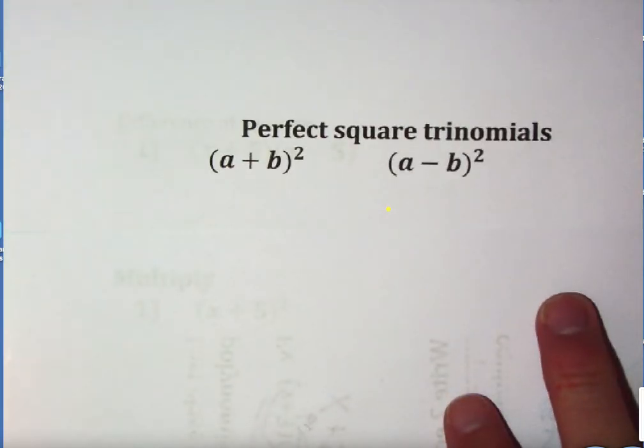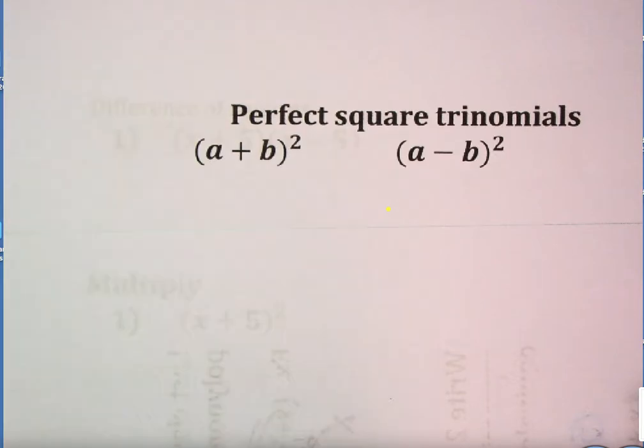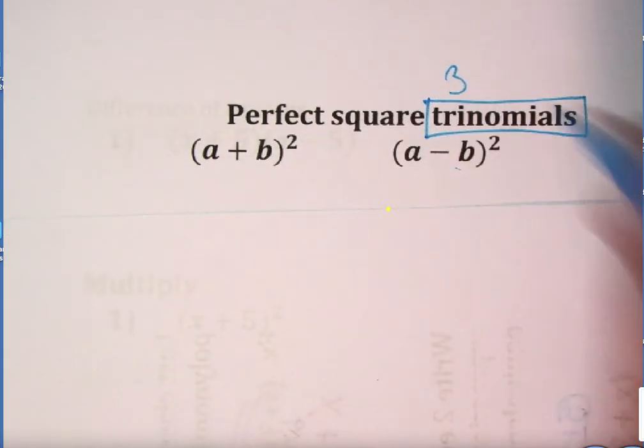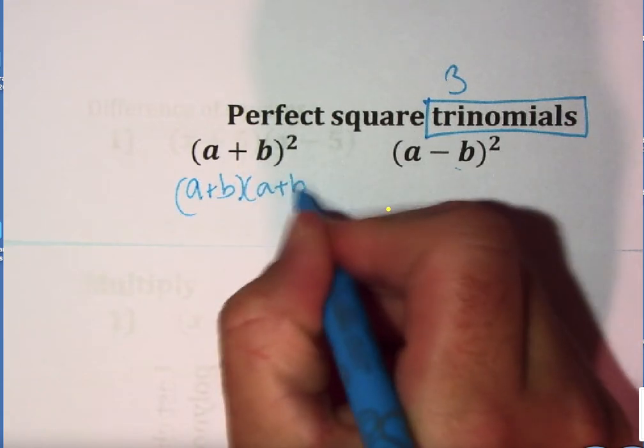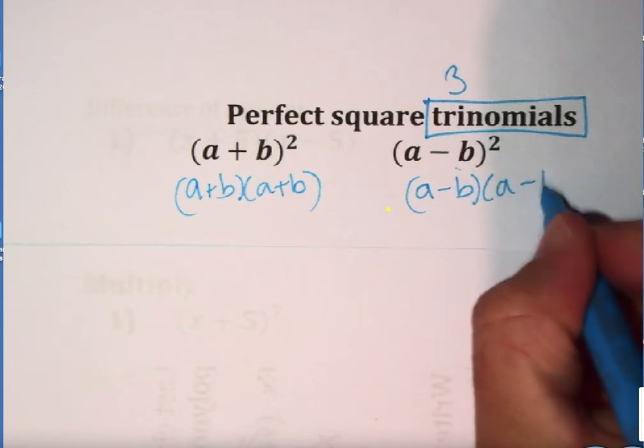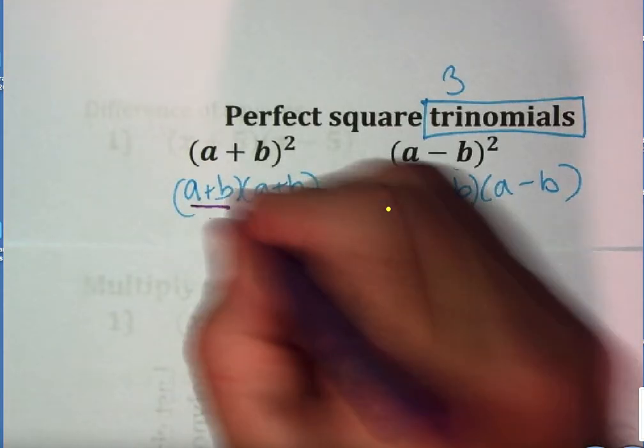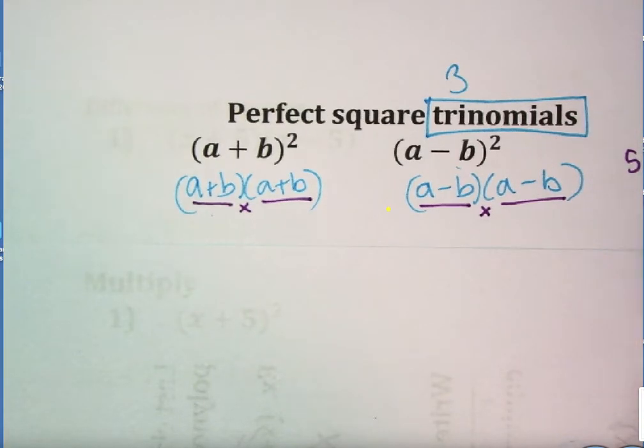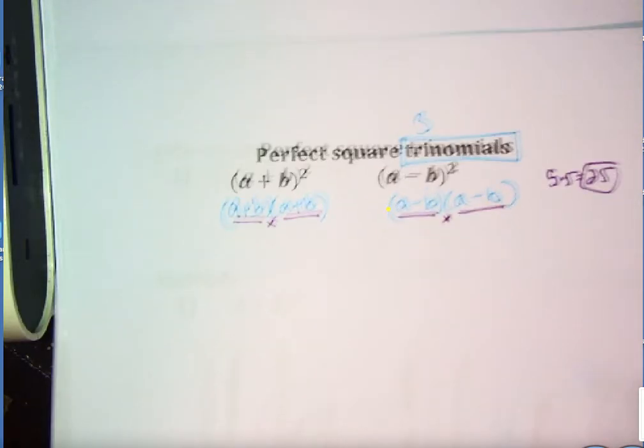This topic is basically called perfect square trinomials. Why do we call them trinomials? We'll talk about that. But these are considered perfect square trinomials. The biggest thing is why trinomials. a plus b squared we can write as a plus b times a plus b. And a minus b squared is a minus b times a minus b. The perfect square part comes from the same thing times itself, right? The same thing times itself. A perfect square is 5 times 5, 25. 25 is a perfect square. So a plus b squared, perfect square. a minus b squared is a perfect square. But what's the trinomial part? And I think we'll see it in a second.